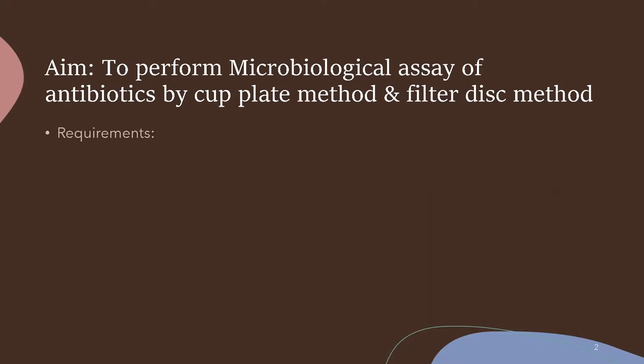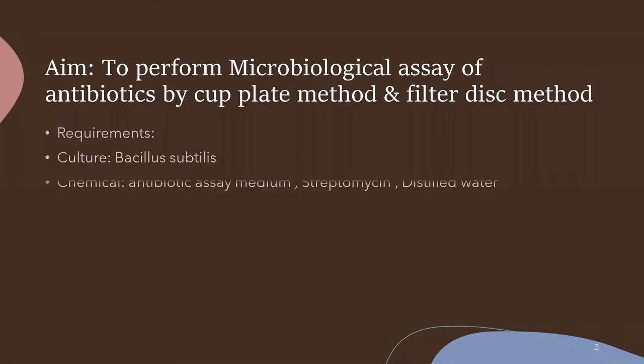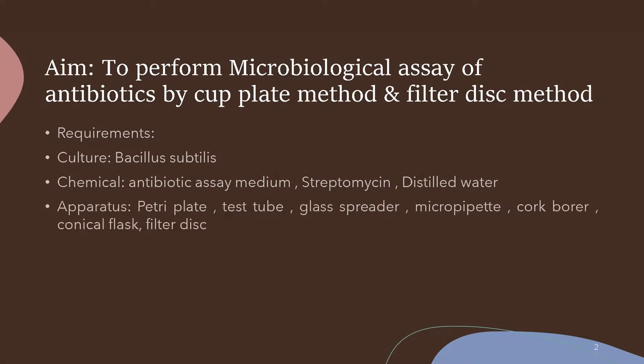The requirements for the practical: the culture required is Bacillus subtilis. Since we are using the antibiotic streptomycin, the test microorganism used is Bacillus subtilis. Then antibiotic assay medium and distilled water. Apparatus required includes battery plate, test tube, glass spreader, micropipette or pipette, cork borer, conical flask, filter disk. Equipment required is autoclave and incubator.